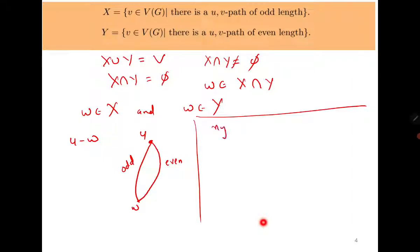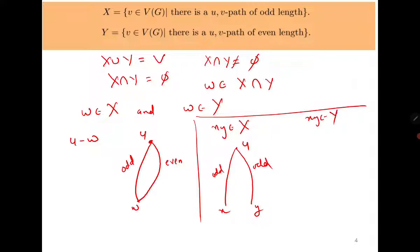For the third property, assume edge xy lies within set X. Since both x and y are in X, the paths from u to x and from u to y are both odd, and together with edge xy this forms an odd cycle — a contradiction. The same argument applies if xy lies within Y. In both cases we reach a contradiction, so there are no edges within X or Y. All three properties hold, and therefore the graph is bipartite.